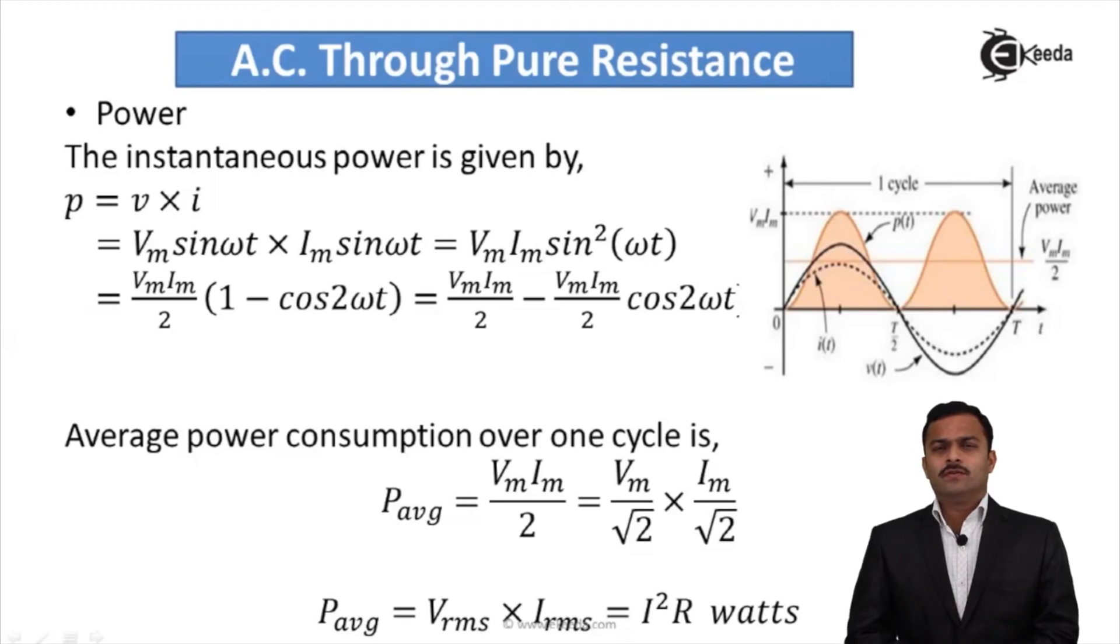In this video, we have seen what happens when AC is passed through a pure resistance. First, voltage and current are both in phase for a resistive circuit. Second, power is Vrms × Irms, also given as I²R. Thank you.